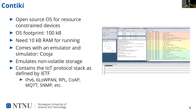Contiki is an operating system for IoT devices and other resource-constrained devices that needs very little hardware to run. The operating system was first released in 2003 and has been under active development since then. To support low-end hardware, the OS footprint is approximately 100 kilobytes and can run on as little as 10 kilobytes of RAM. It also comes with an emulator and simulator called Cooja, shown here on the screen. The emulator can emulate the hardware on which the OS image is running, and the simulator can simulate huge networks of nodes and can connect to the internet through a gateway. In this work, we mainly used the emulator to emulate the hardware and storage in single devices.